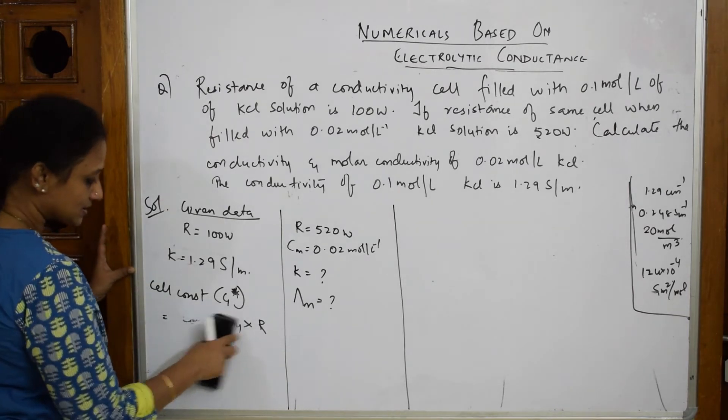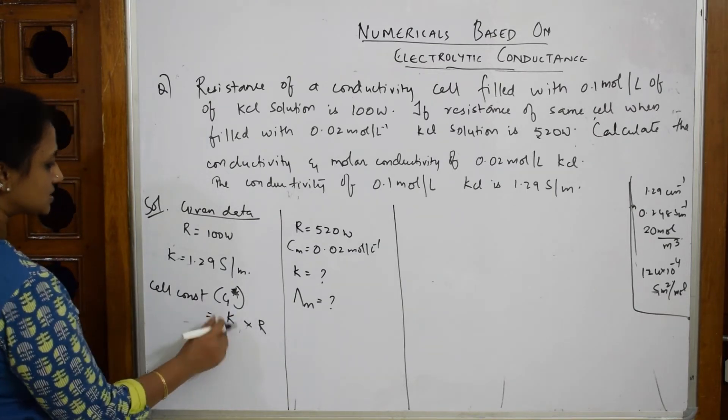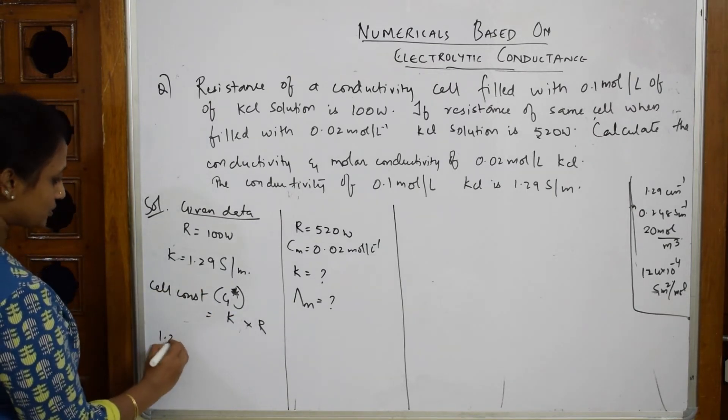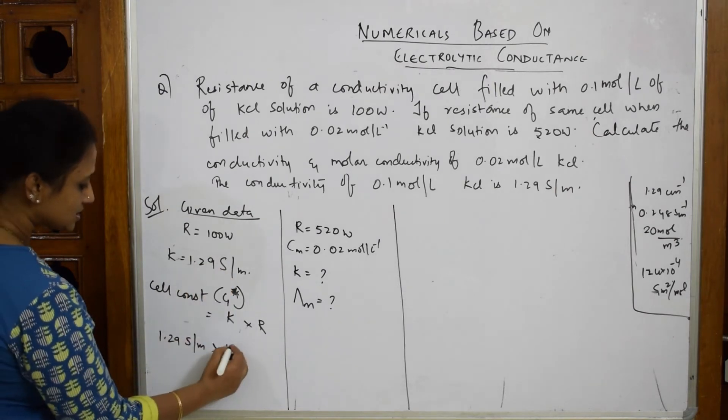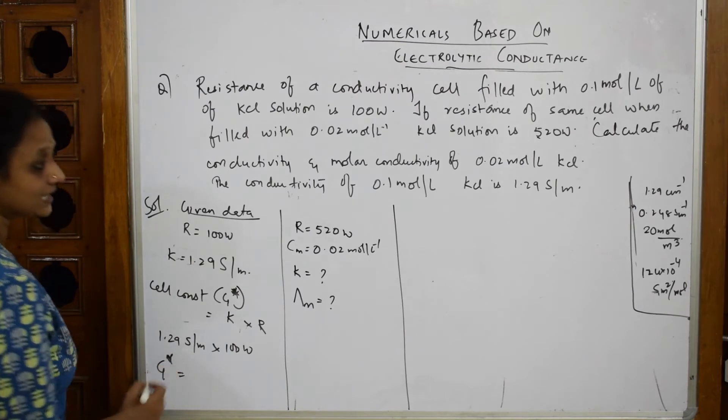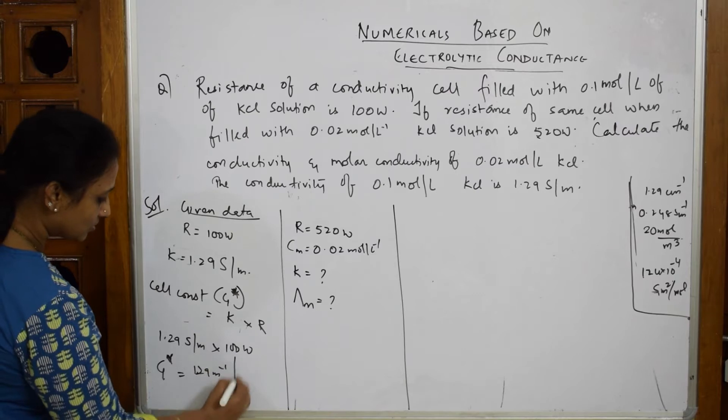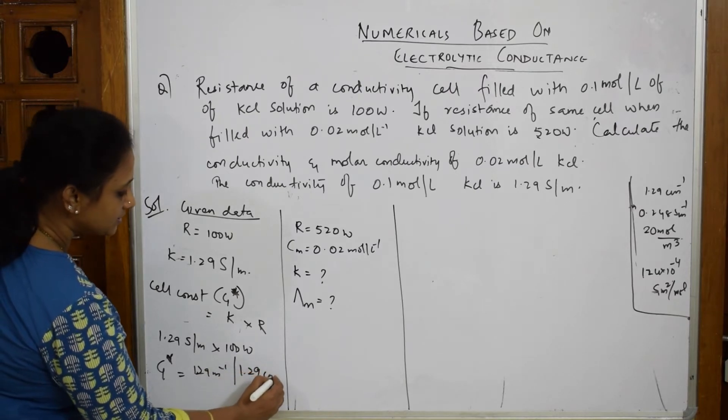So cell constant equals K × R, where K = 1.29 S/m and resistance is 100 ohms. When I solve this, the G* value is 1.29 m⁻¹ or 129 cm⁻¹.